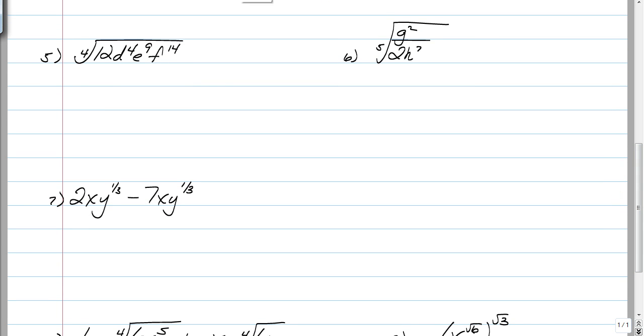Number 5. This is just a bigger example of simplifying. So I'd like you to pause and try number 5 on your own. So this goes back to number 1 and 2 where you just ask yourself, can 12 be simplified by a 4th root? No, it can't. So it stays inside. How many times does 4 go into 4? Once with no remainder. How many times does 4 go into 9? Twice with one remainder. And how many times does 4 go into 14? Three times with two remainder. And that's it. You're done.